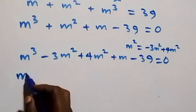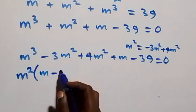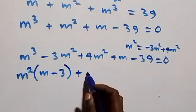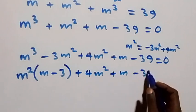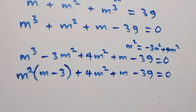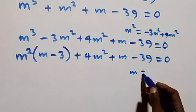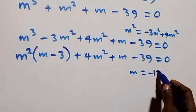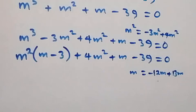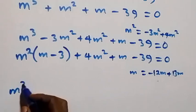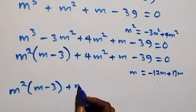We factor m squared as common from the first group: m squared times open bracket m minus 3, close bracket. Then from the remaining terms, we write m as minus 12m plus 13m, giving us 4m squared plus 4m plus m minus 39 equals zero.